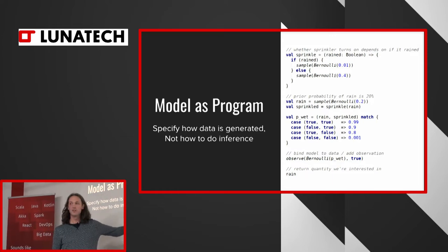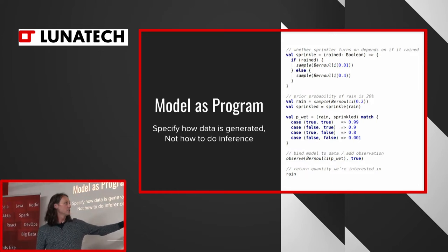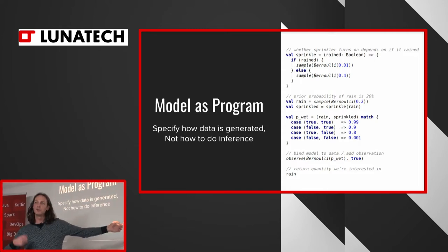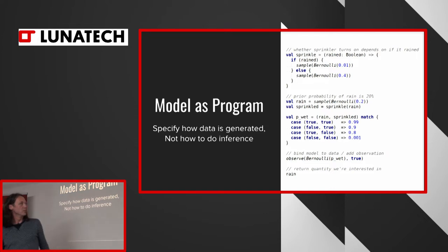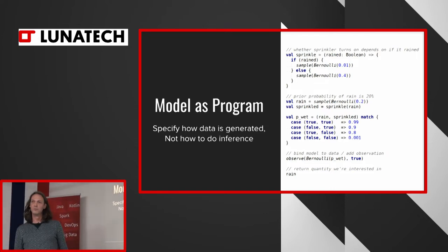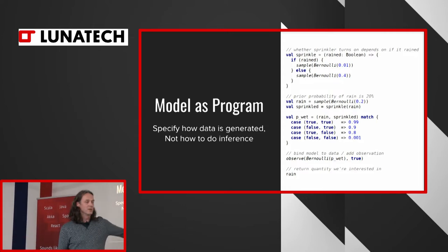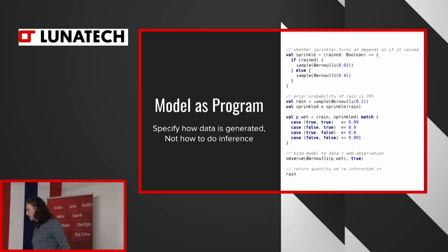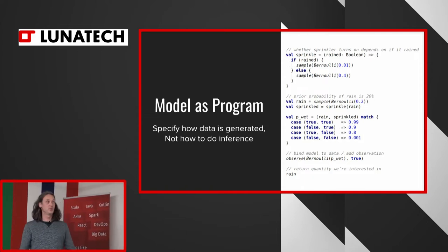And then finally we say that the grass is wet. So we have an observation. And we can have these probabilities that the grass is wet given that you have this probability. And we know that it is, so you observe a value of true. And then finally we want to know whether it actually rained. So that's the thing we're going to return. So as you can see, we're not doing any inference. We're not calculating anything. We're just specifying how could the data be generated.